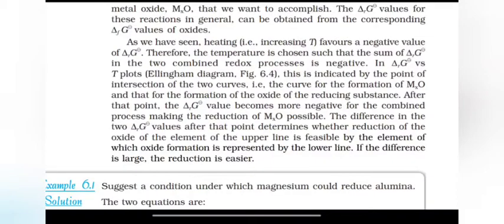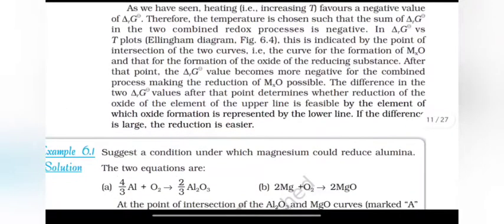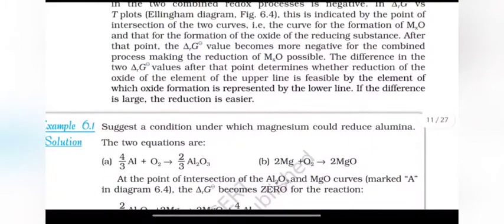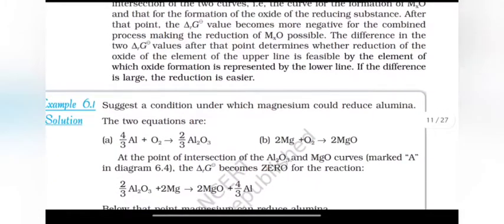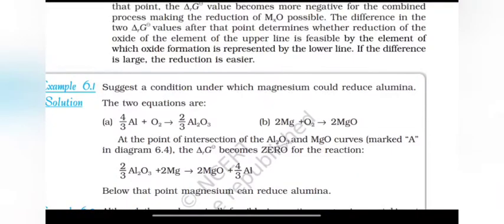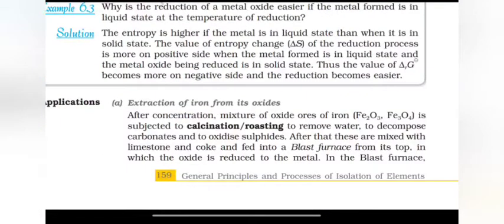After that point the ΔG values become more negative for the combined process making the reduction possible. The difference in the two ΔG values after that point determines whether reduction of oxide of the element of the upper line is feasible by the element of which oxide formation is represented by the lower line. If the difference is large the reduction is easier. Applications: